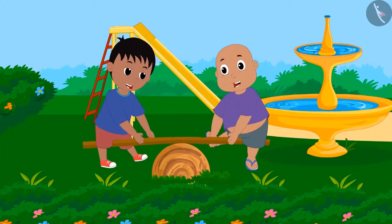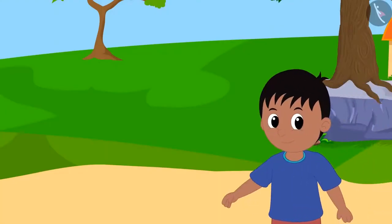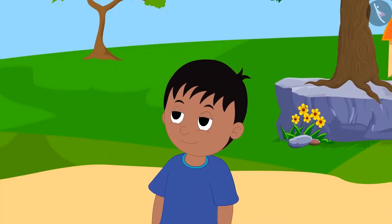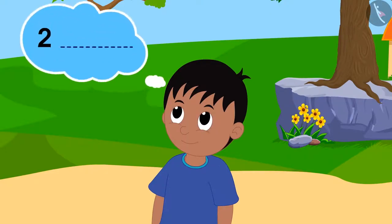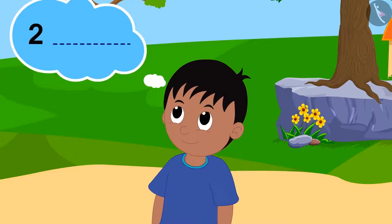Raju totally forgot about bringing the cloth for his father's shirt. When he was returning home, he remembered that he had to go to the uncle's shop, but he only remembered the number 2 from the measurements his father had given him.